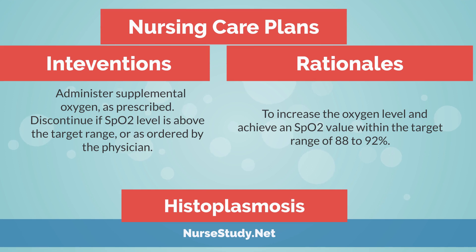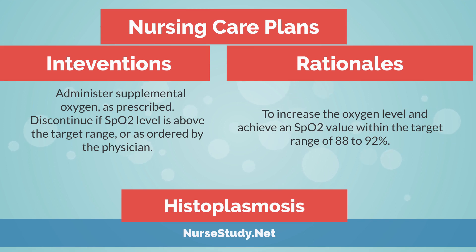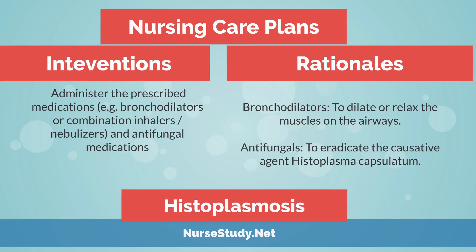Intervention: Administer supplemental oxygen as prescribed. Discontinue if the oxygen level is above the target range or as ordered by the physician. Rationale: To increase the oxygen level and achieve an oxygen saturation within the target range of 88 to 92%.